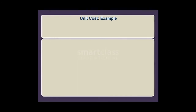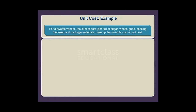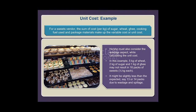For a sweets vendor, the sum of cost per kg of sugar, wheat, ghee, cooking fuel used, and packaging materials makes up the variable cost or unit cost. The vendor must also consider the wastage aspect while calculating unit cost. For example, five kg of wheat, two kg of sugar, and one kg of ghee may not result in 16 packs of sweets at half kg each — it might yield only 13 or 14 packs due to wastage and spillage.